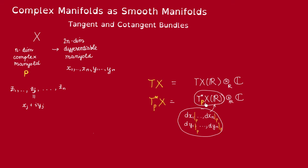So then the real cotangent space at P has this basis. Then the complex cotangent space at P has this basis dzj, dzj bar.